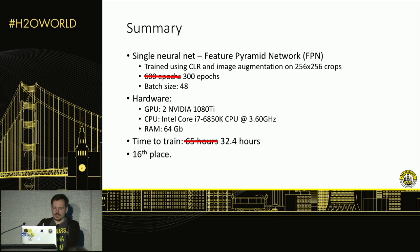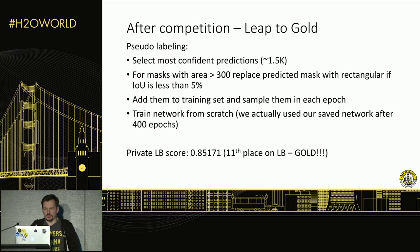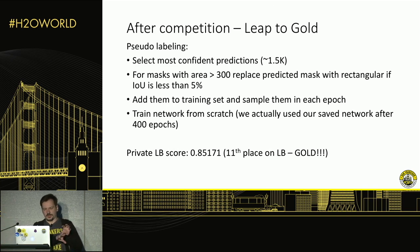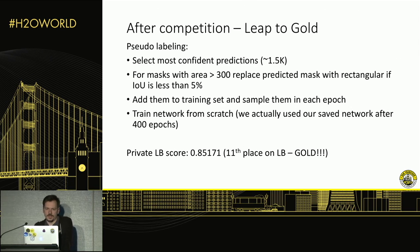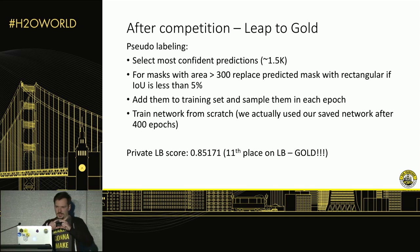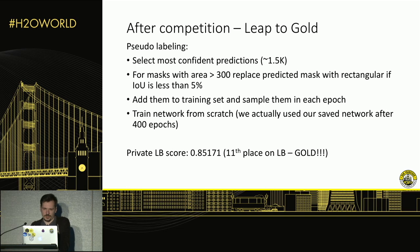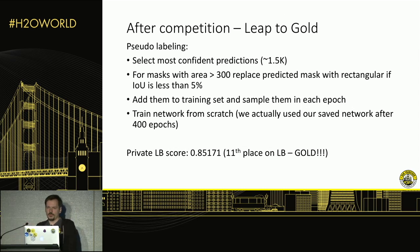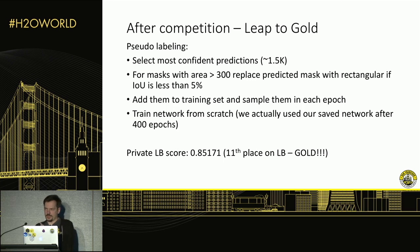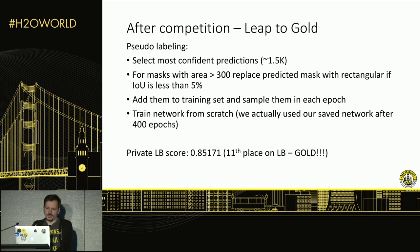After the competition ended, there was one trick we didn't have time to implement: pseudolabeling. The idea is simple — you take your predictions from the test set and use these predicted values as additional training data. You pick the most confident predictions, about 1.5K images. Also, because all masks in the dataset were basically rectangular shapes, for images with bigger areas — which are easier to predict — we replaced the predicted mask with a rectangle, controlling that the difference in area between mask and rectangle was less than 5%. We added these to the training set, fine-tuned from our pre-trained 400-epoch network for around 100 epochs, and our private leaderboard score reached 11th place — essentially a gold medal position, though the competition had already ended.